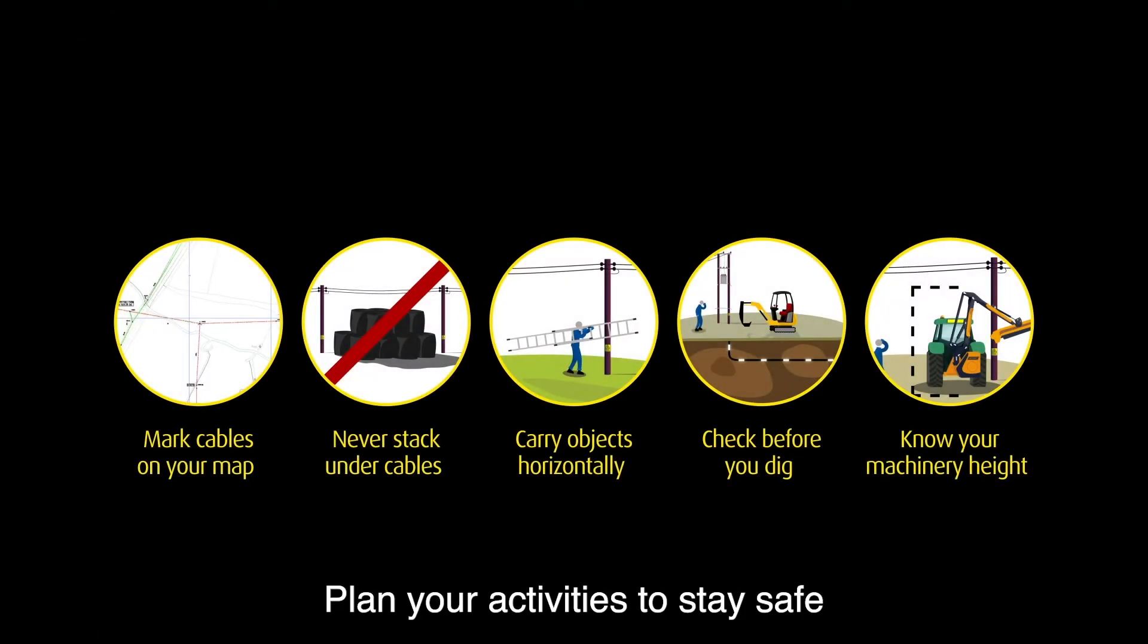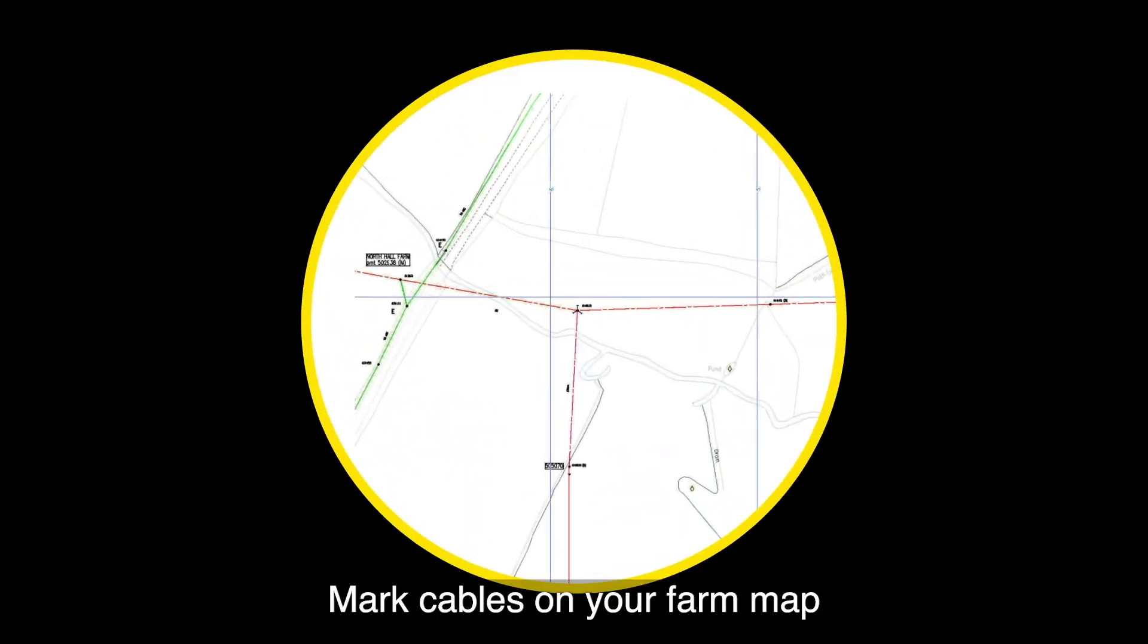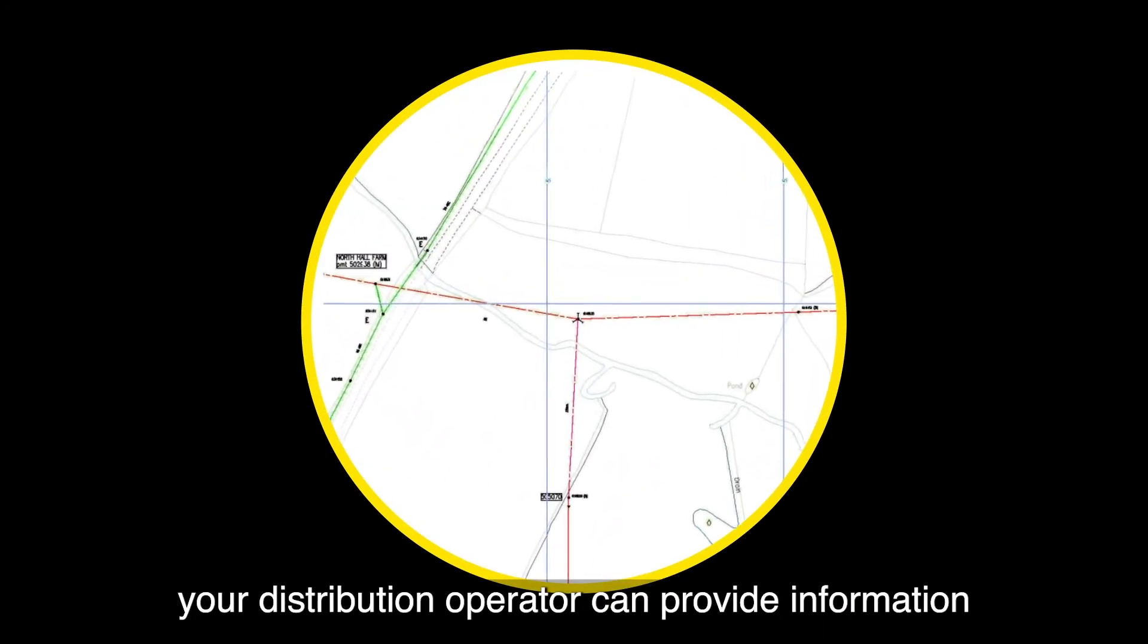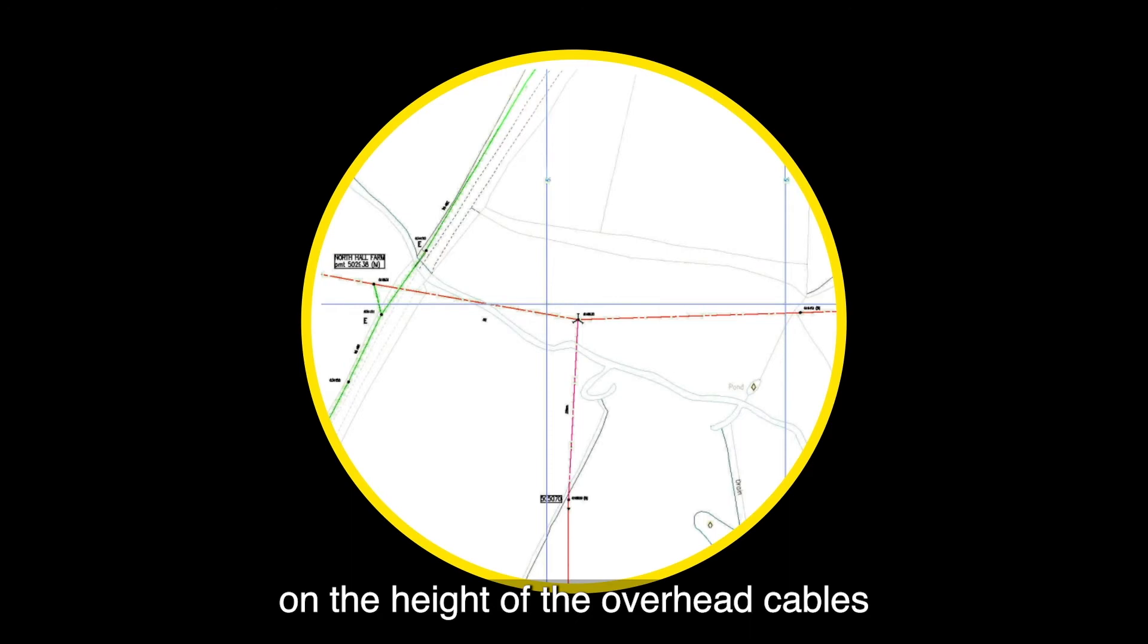Plan your activities to stay safe and inform all staff and contractors. Mark cables on your farm map. Your distribution operator can provide information on the height of the overhead cables.